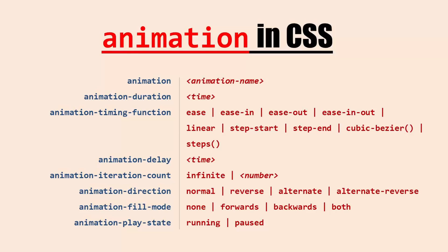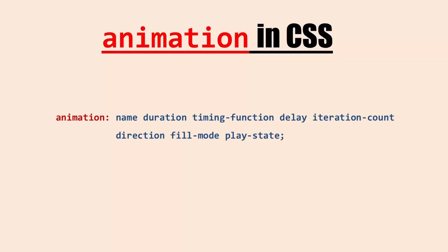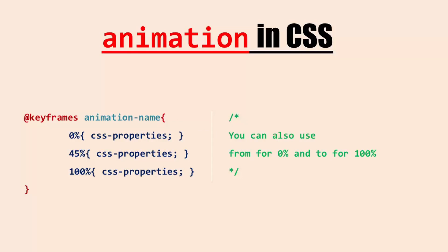Here we have the syntax of our animation in a single line: name, duration, timing function, delay, iteration count, direction, fill mode, and play state. You can write them in any order, but the first time value will be assigned to duration and the second time value will be assigned to delay. The actual animation is written in keyframes — you type at-keyframes followed by the name of your animation, and inside you specify what should happen at each keyframe using percentages. Zero percent is when the animation starts and 100% is when it ends.